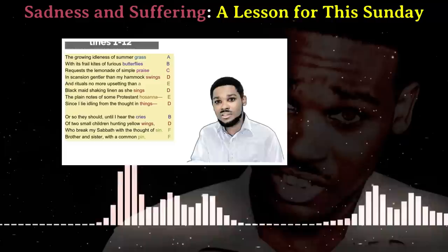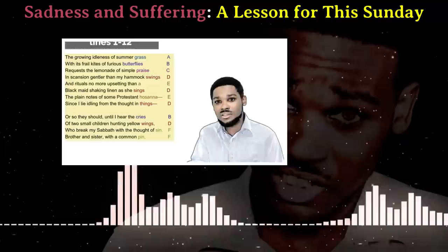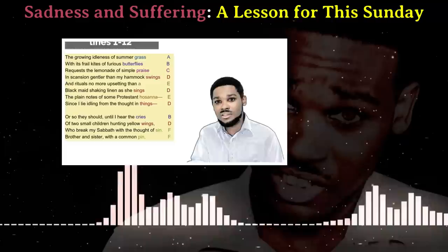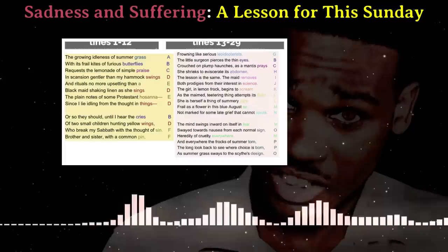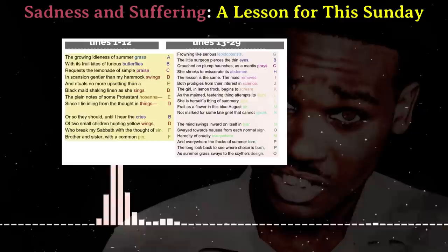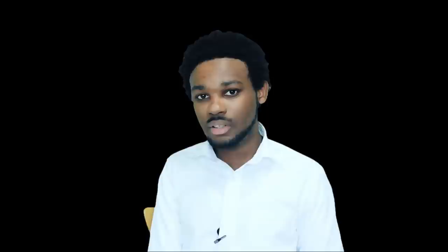In A Lesson for This Sunday, nature suffers throughout the poem. In stanza one, it is implied that nature feels underappreciated and unacknowledged by man, which is why it feels the need to request praise. Following that, we see the butterfly suffering at the hands of the little girl, then the frocks of summer are said to be torn, and the grass is said to sway to the scythe's design. Nature continually suffers at the cruelty and thoughtlessness of man. This realization strikes the speaker with fear and sorrow.